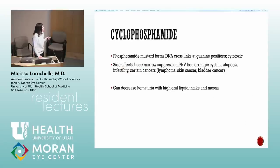Cyclophosphamide: a mustard-gas DNA cross-linker, cytotoxic. Side effects include bone marrow suppression, hemorrhagic cystitis — prevented by hydration and mesna — and increased risk of cancers: lymphoma, non-melanoma skin cancers, and bladder cancer.